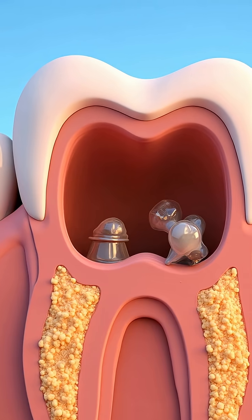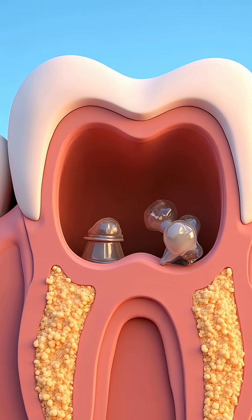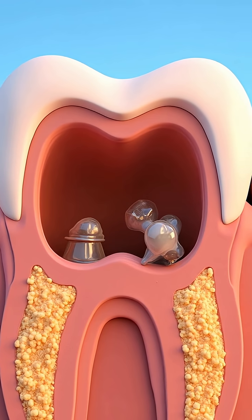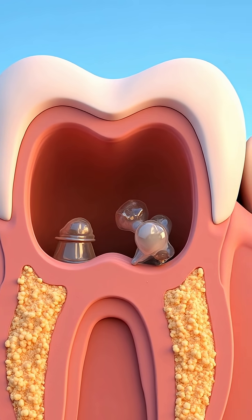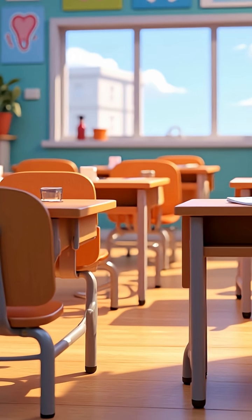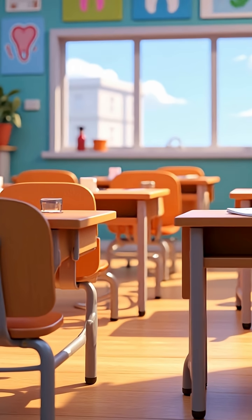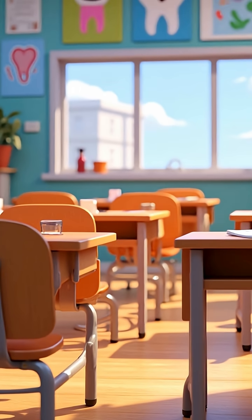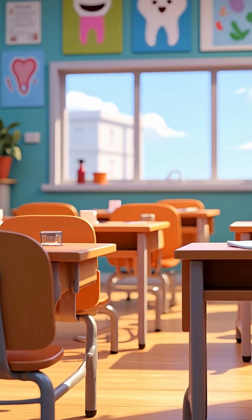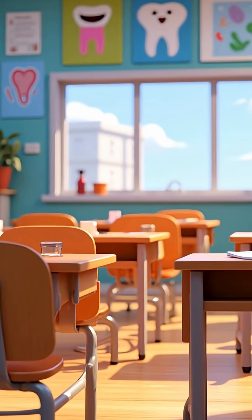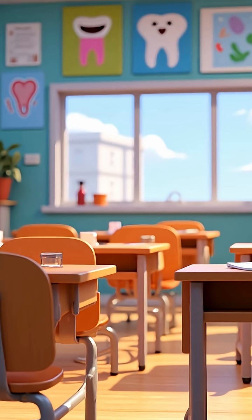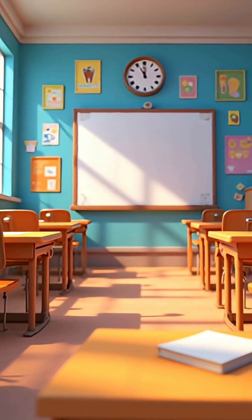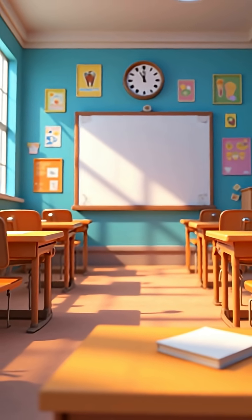Understanding dental caries: cause and prevention. Dental caries, or tooth decay, is one of the most common oral diseases worldwide. The main culprits are specific bacteria, primarily Streptococcus mutans and Lactobacilli. These bacteria live in the mouth and feed on sugars from the food we eat. As they metabolize sugars, they produce acid that attacks the tooth enamel, causing decay.